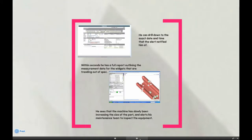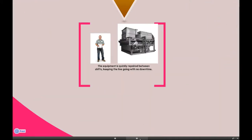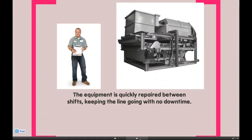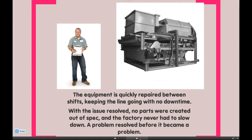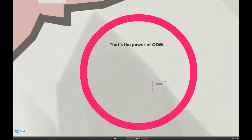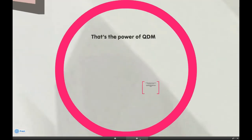Upon inspection, they find that the machine is just wearing out. It requires a quick repair that they do between shifts, without the line going down. With the issue resolved, no parts were created out of spec, and the factory never had to slow down. Problem resolved before it even became a problem. That's the power of QDM.